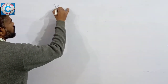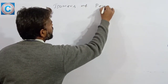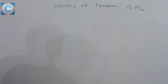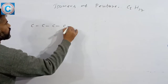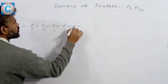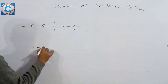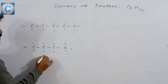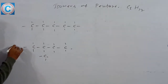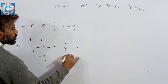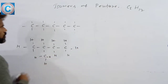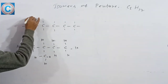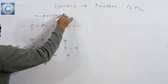Now, the isomers of pentane, that is C5H12. First, 5 carbon atoms in a straight chain. This one is N-pentane or normal pentane.